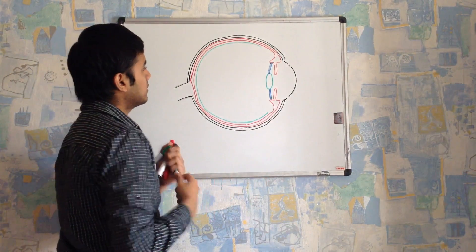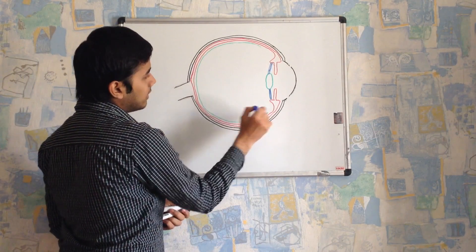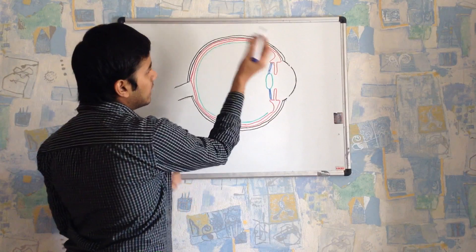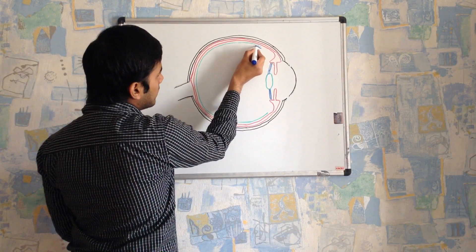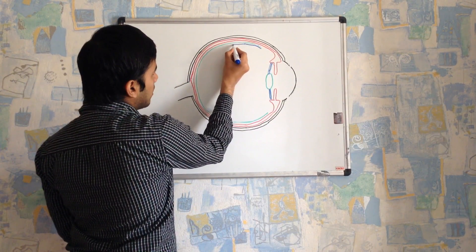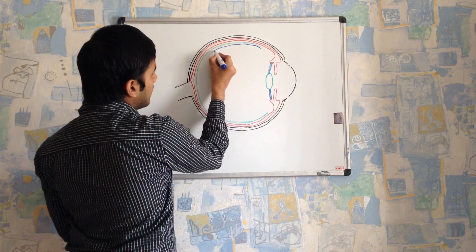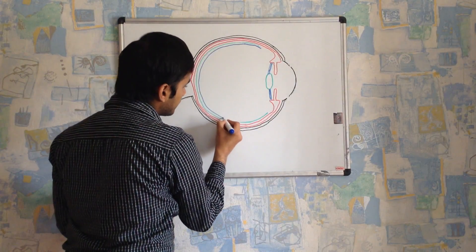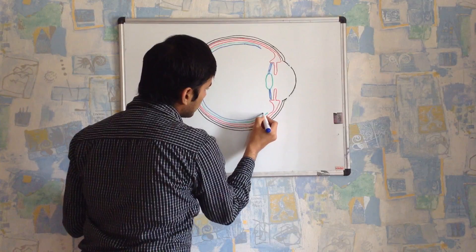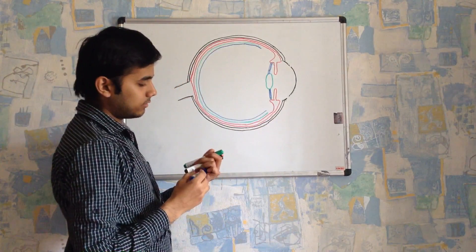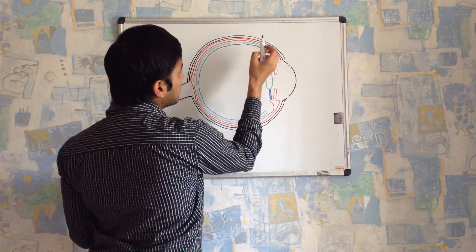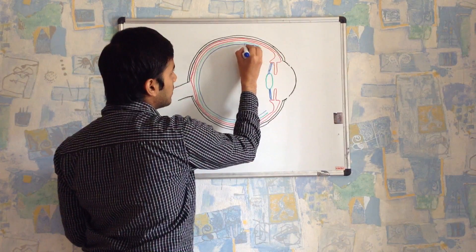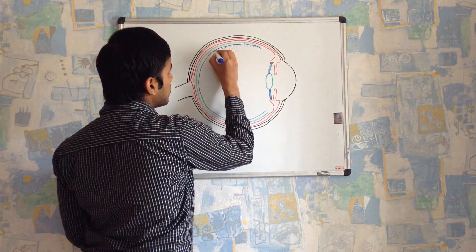The pigmented layer does not contain rods and cones. This outer layer of the retina is drawn in green and is called the pigmented layer. Moving to the next layer, drawn in blue, this is called the retinal layer or the light sensitive layer. This light sensitive layer contains rods and cones, and the discontinuous projections I'm drawing represent the rods and cones.